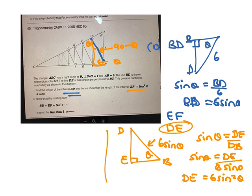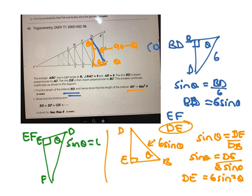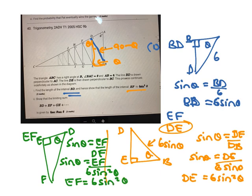So if you want to get now EF, EF is this triangle. So there's EF, and there's D, and that's theta. So you get sine theta equals EF on DF. So that sine theta equals EF on DF, which is 6 sine squared theta.